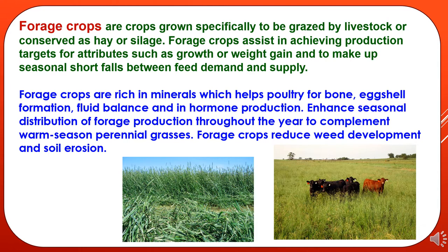A soiling crop is a green fodder which is cut and fed to cattle. Forage crops are grown specifically to be grazed by livestock or conserved as hay or silage. They assist in achieving production targets for attributes such as growth or weight gain and to make up seasonal shortfalls between feed demand and supply. Forage crops are rich in minerals which help poultry for bone and egg shell formation, fluid balance, and hormone production.